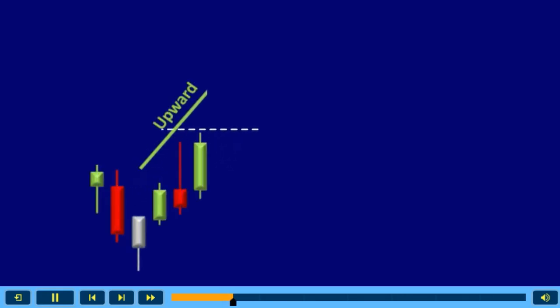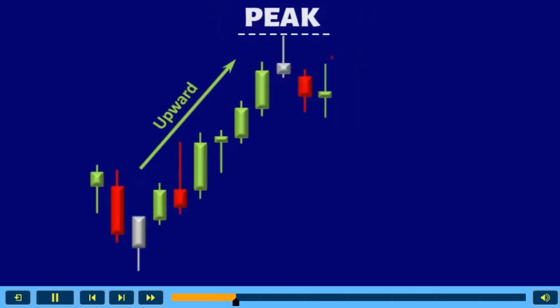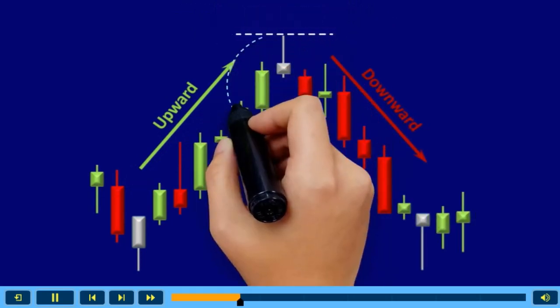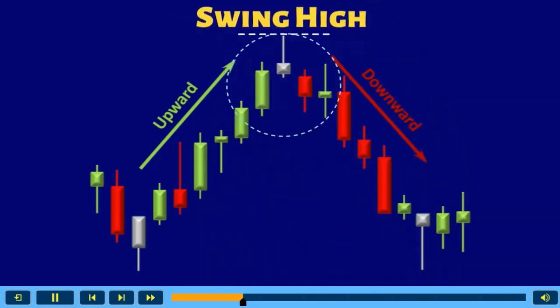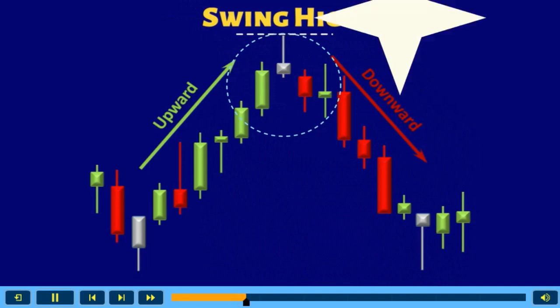The price that is going up reaches its highest level at a peak before reversing down. The highest reversal turning point on the chart is defined as swing high, which is abbreviated as SH.